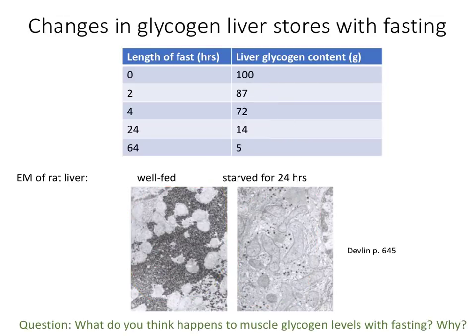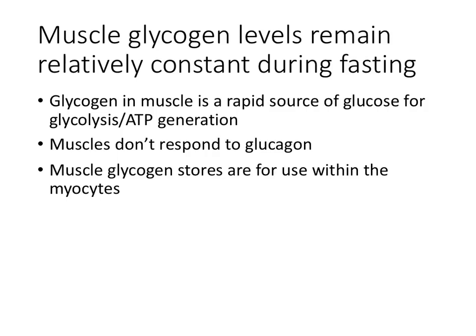Question: what do you think happens to muscle glycogen levels with fasting? Unlike liver glycogen, muscle glycogen levels remain relatively constant during fasting. Remember, the purpose of glycogen within muscle is to be a rapid source of glucose for glycolysis and ATP generation. Imagine you're fasting and you want to get food — you'd want your muscles to be able to work. Muscles do not have the glucagon receptor on their surface, so they don't respond to glucagon.